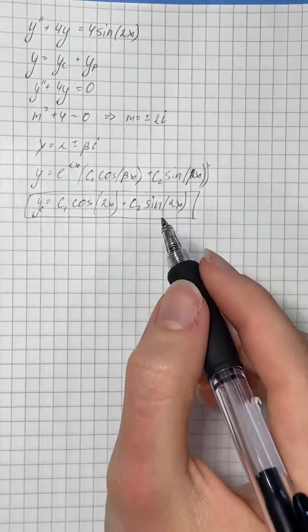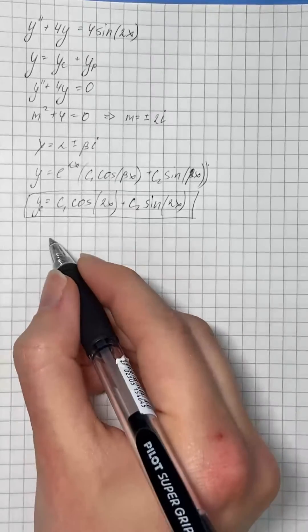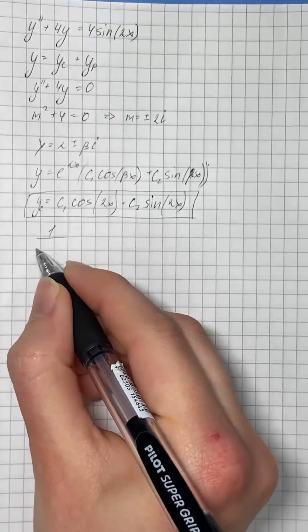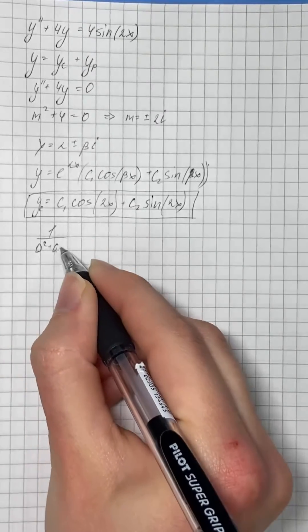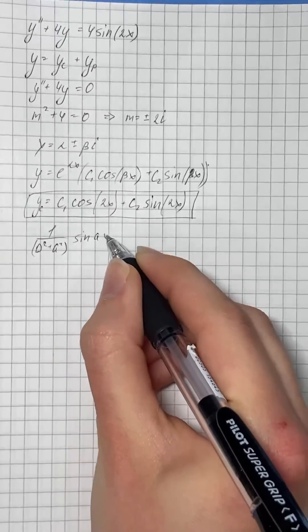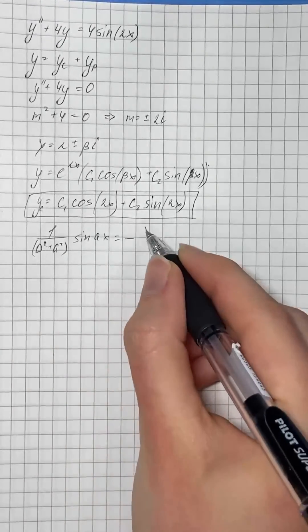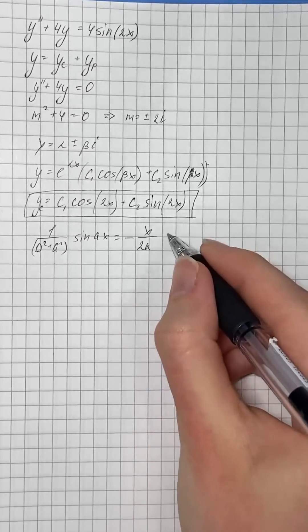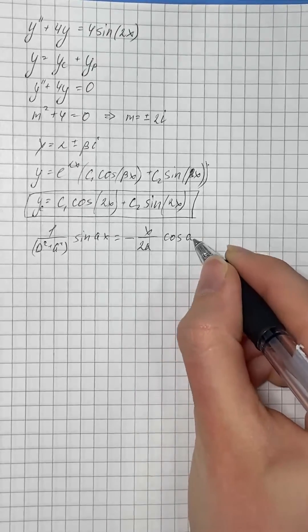Now we find the particular solution using the formula: 1 over d squared plus a squared times sine of ax equals negative x over 2a times cosine of ax.